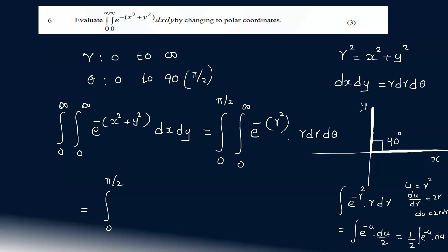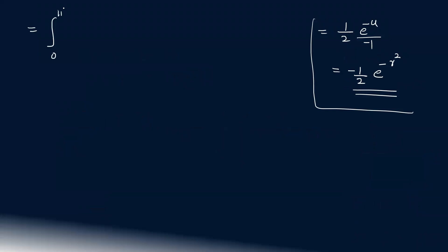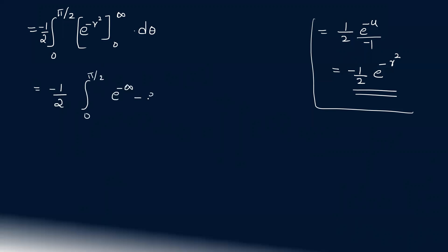Substituting back, that equals minus 1 by 2 e raised to minus r square, evaluated from 0 to infinity, times dθ. That equals integral 0 to pi by 2 of minus 1 by 2 times e raised to minus infinity minus e raised to minus 0, dθ. Since e raised to minus infinity equals 0 and e raised to 0 equals 1, this becomes 1 by 2 integral 0 to pi by 2 dθ, giving the final answer of pi by 4.